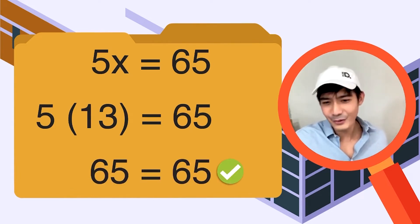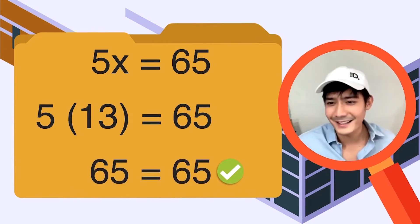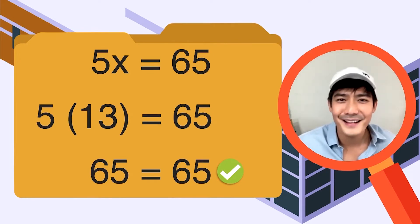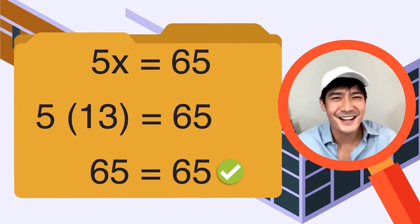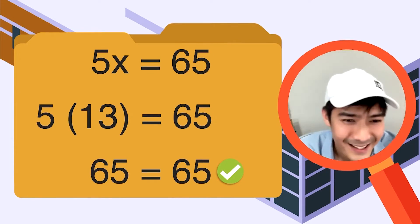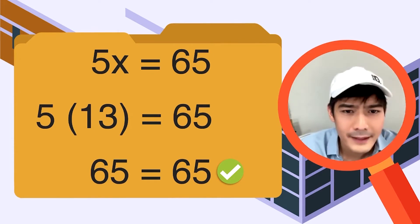Now let's check — i-substitute natin yung value ng x natin for this equation. 13 times 5 is equal to 65. 65 is equal to 65. Mahusay ang ating mga classmates sa araw na ito — good job you guys!